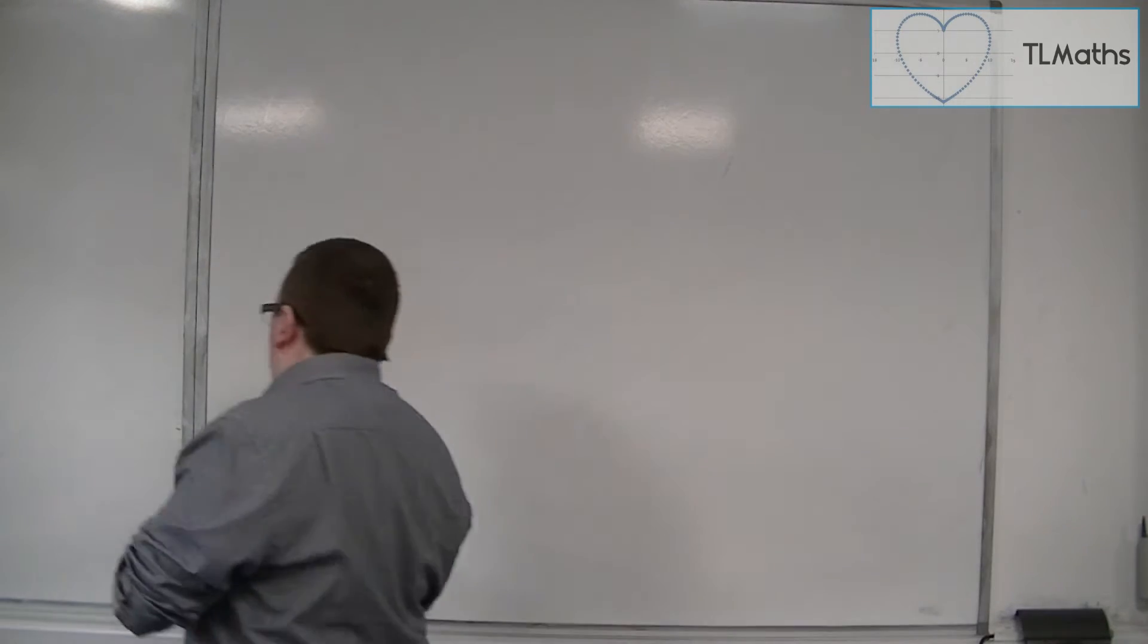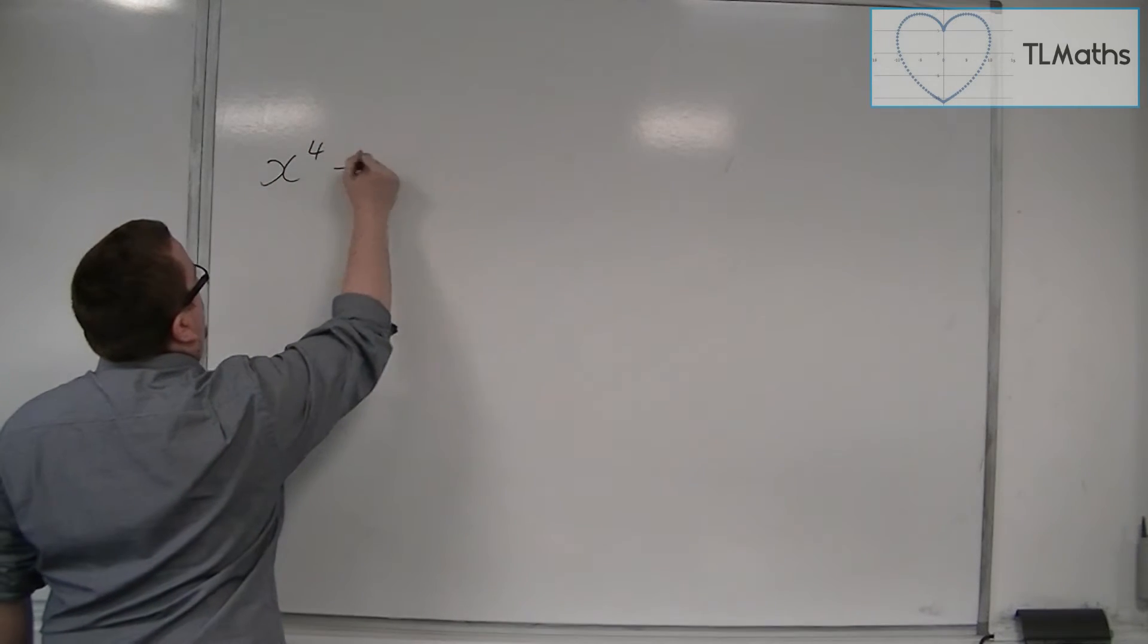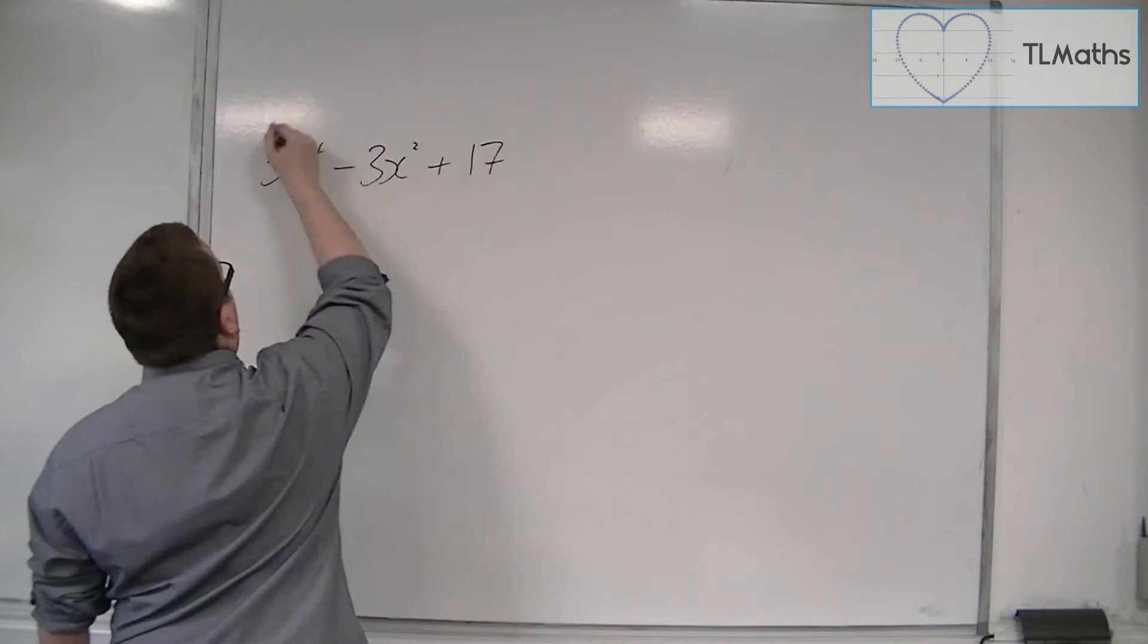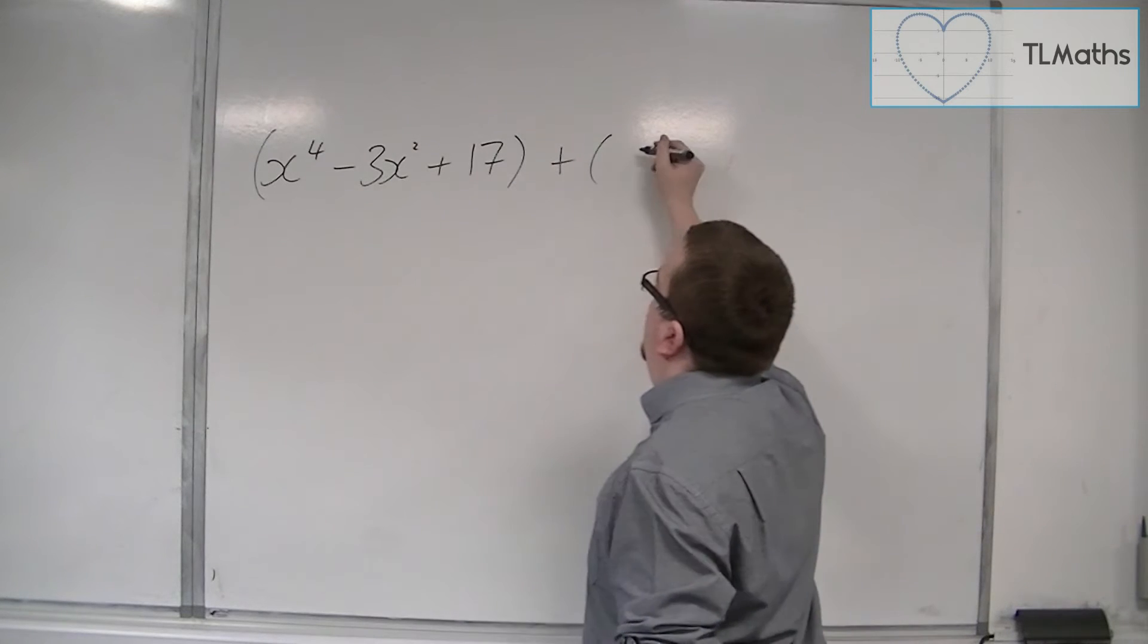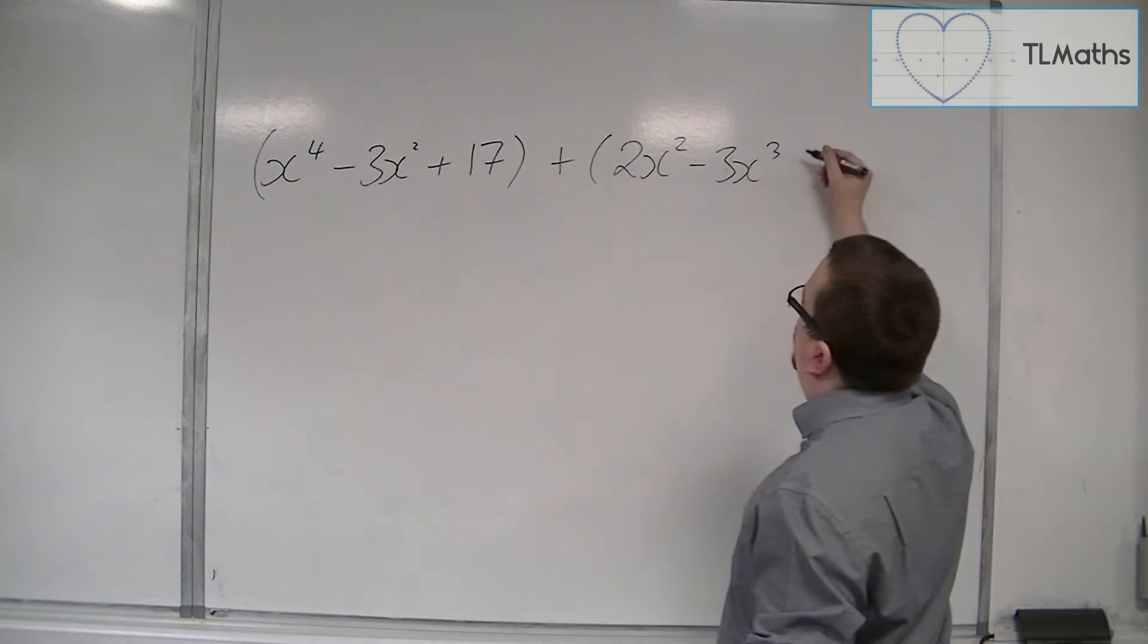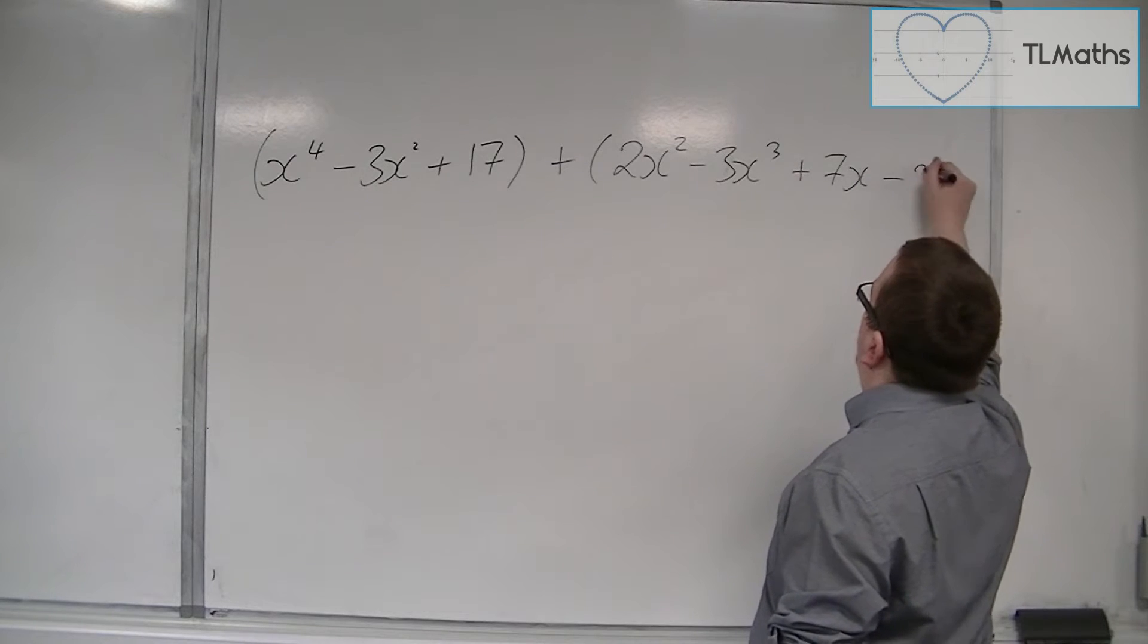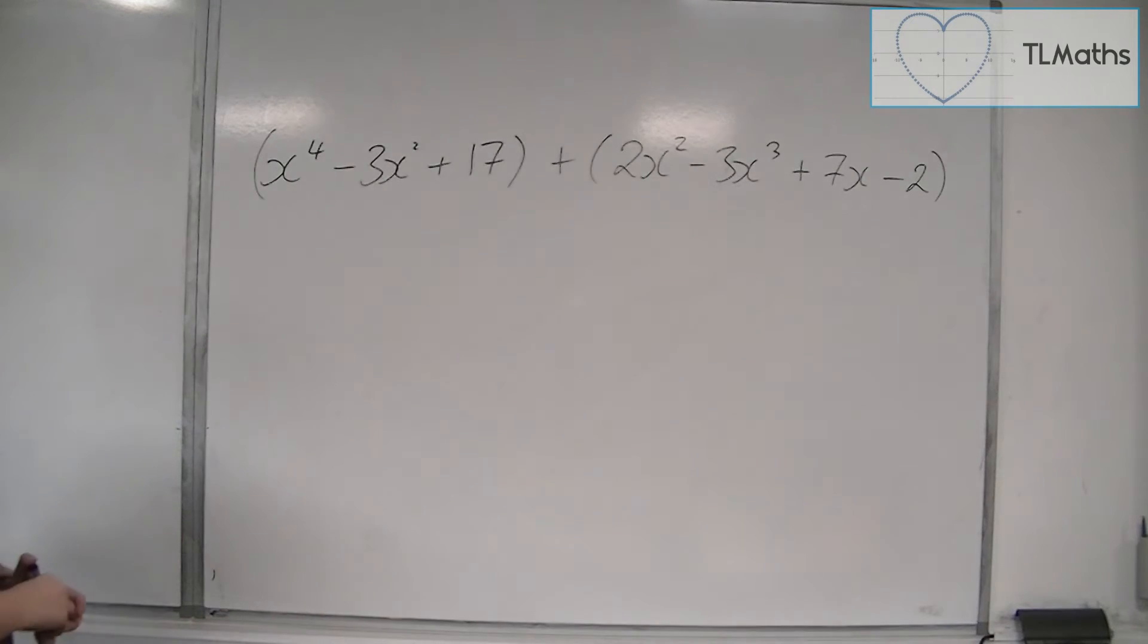So let's say we've got something like x to the 4 take away 3x squared plus 17. And I'm going to add that to another polynomial, let's say 2x squared minus 3x cubed plus 7x minus 2. So let's say I'm just going to add these two polynomials together.